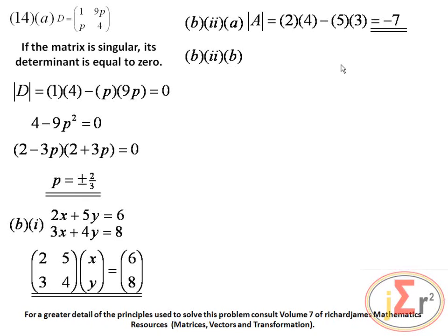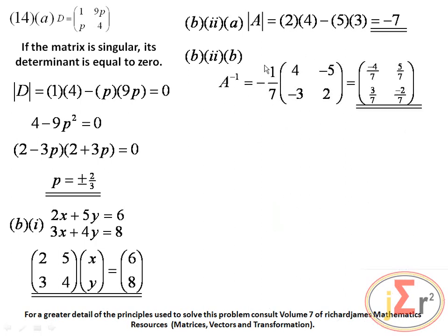We need to show that A inverse equals the given matrix. A inverse equals 1 over the determinant multiplied by the adjoint. The adjoint is formed by swapping the main diagonal elements and changing the signs of the off-diagonal elements. Multiplying through by 1 over negative 7: we get negative 4 over 7, positive 5 over 7, positive 3 over 7, and negative 2 over 7.